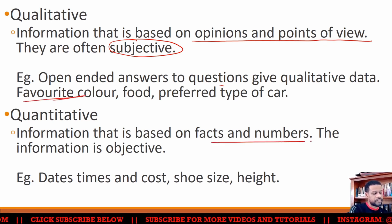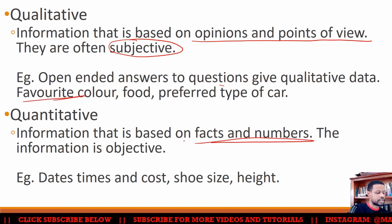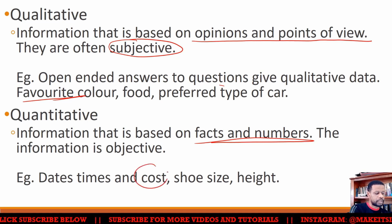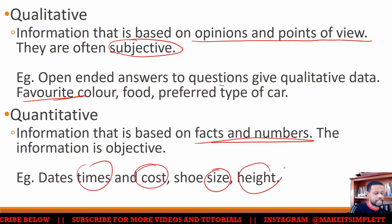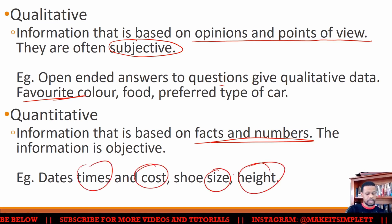Quantitative data is based on facts and numbers, and it's usually objective. Numbers like cost, times, sizes, heights — all those things are quantitative.